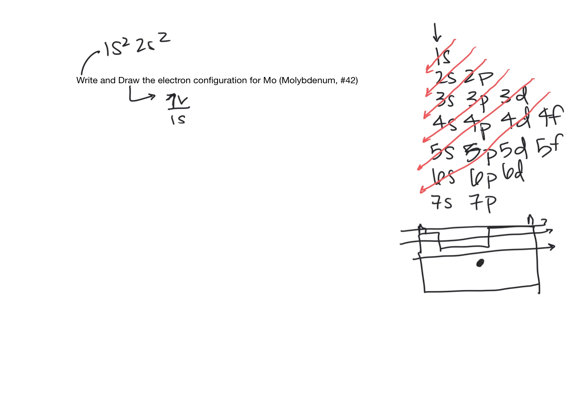we're going to go ahead and start by writing these out, where we have 1s², 2s², 2p⁶, 3s², 3p⁶, 4s², 3d¹⁰, 4p⁶, getting close on space, 5s², and so on.